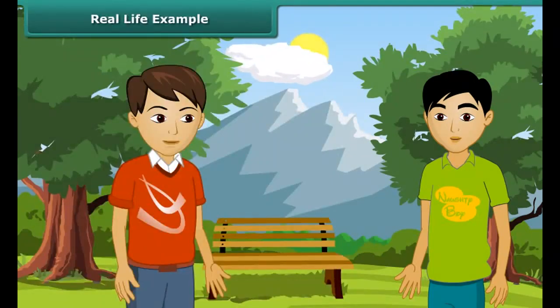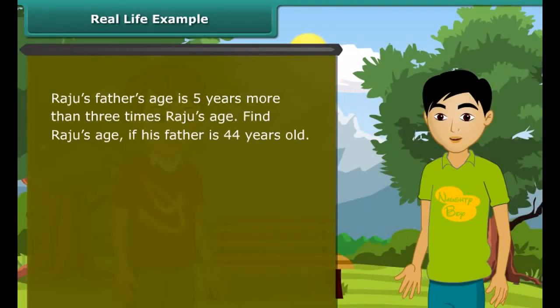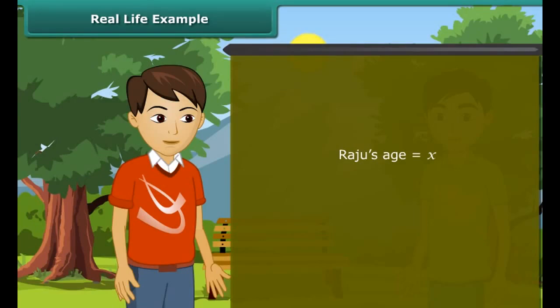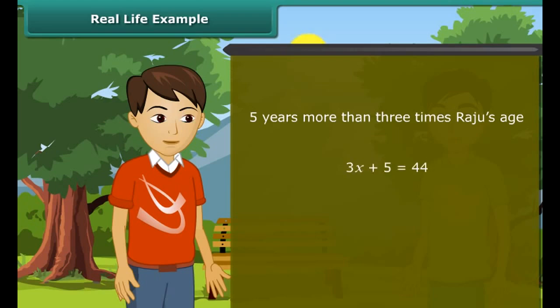Ajay, now you know how to solve the equation. There is one problem for you. Ask. Raju's father's age is 5 years more than 3 times Raju's age. Now find Raju's age if his father is 44 years old. We have to find Raju's age. Therefore, we will take it as X. Now 5 years more than 3 times Raju's age is 3X plus 5, which is equal to 44. Now we will solve this equation.